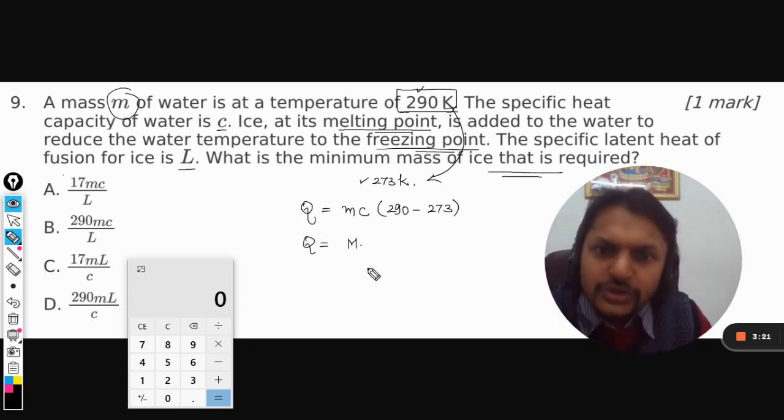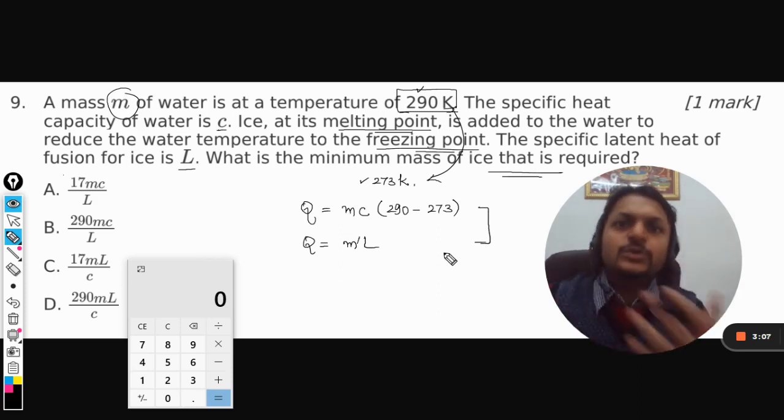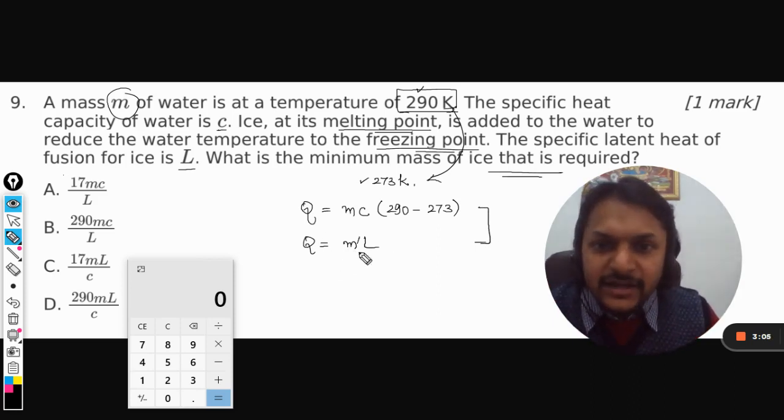This heat will be supplied by ice, the mass of which is not known to me. I can write m dash. That mass is not known but the latent heat is given as L, so I can use L as a variable. Both of these heats should be equal to each other.